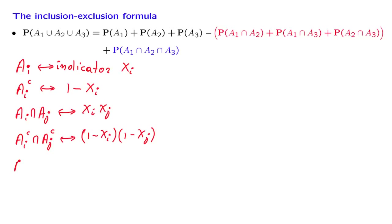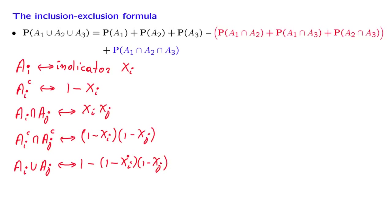What is the indicator function of the complement of a union? Here we use De Morgan's Laws, which tell us that the complement of a union is the intersection of the complements. So this event is the complement of the union, and the associated indicator function is 1 minus the product expression. If we had three-way intersections or a three-way union, we would get a product of three terms instead of two.